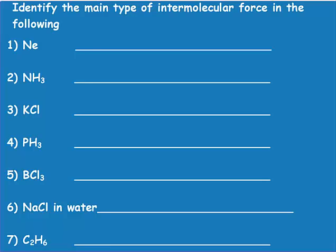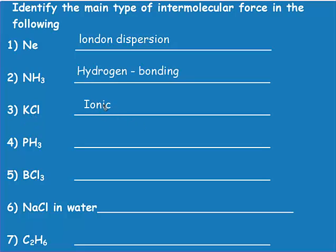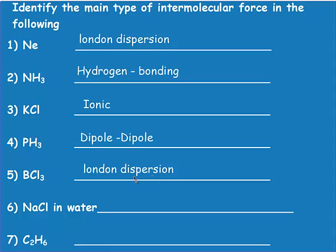Neon is a nonpolar molecule, so that's London dispersion. NH3 has a lone pair on nitrogen making it polar, and hydrogen is attached to nitrogen, so that's hydrogen bonding. KCl is an ionic compound, so it has ionic intra- and intermolecular forces. PH3 is polar but hydrogen is not attached to nitrogen, oxygen, or fluorine, so it's dipole-dipole. BCl3 has no lone pairs and is nonpolar, so that's London dispersion. A combination of an ionic compound and a dipole would be ion-dipole force. C2H6 is a hydrocarbon, which is nonpolar, so that's London dispersion.